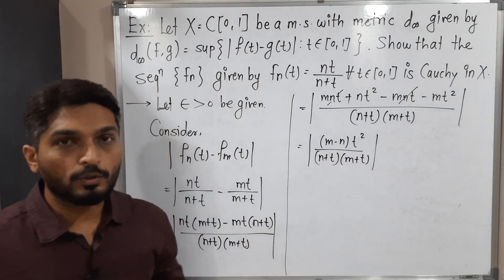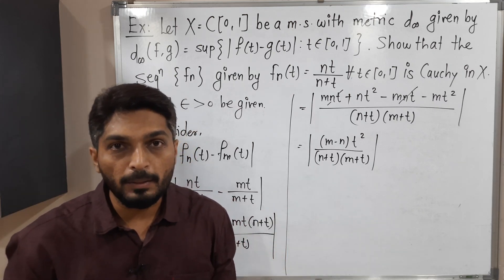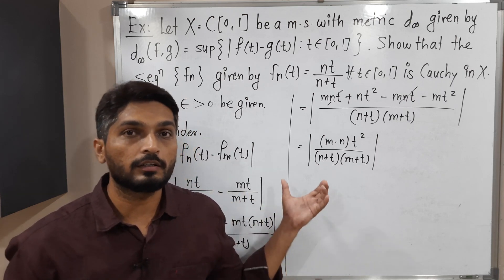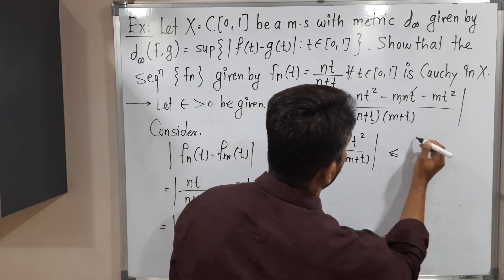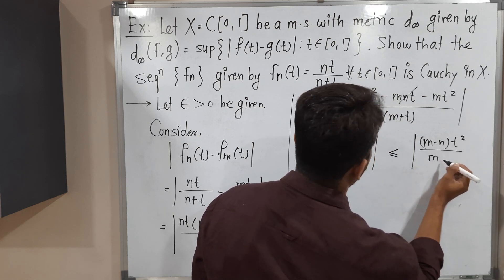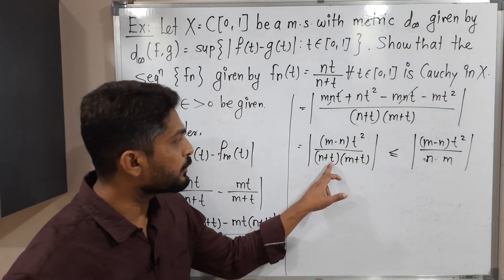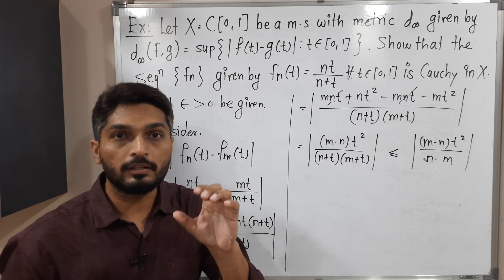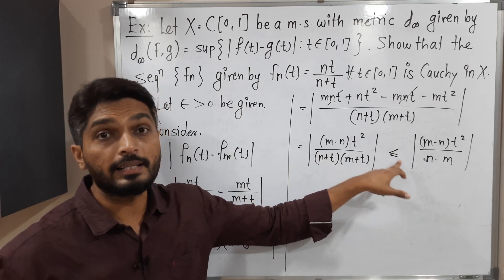As you can see, t is a positive real number since we have taken t from the closed interval [0,1]. That means we are adding some positive number to n and m. So if we remove t from the denominator — reducing the denominator — the actual value of this mod will get increased. So this is less than or equal to mod of (M minus N)t² upon N·M.